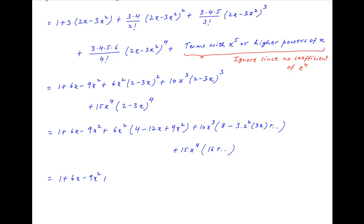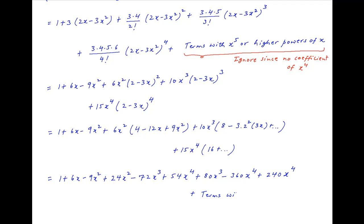Terms involving x raised to the power 5 and higher powers of x are ignored, and we are left with 1 plus 6x minus 9x square plus 24x square minus 72x cube plus 54x raised to the power 4, plus 80x cube minus 360x raised to the power 4, plus 240x raised to the power 4, plus terms involving x raised to the power 5 and higher powers of x.